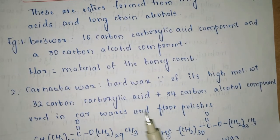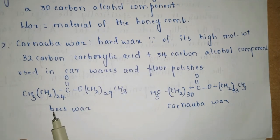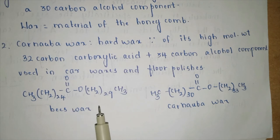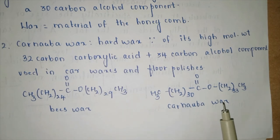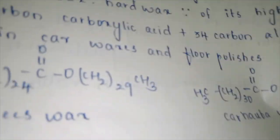Carnauba wax has a high molecular weight — a 32-carbon carboxylic acid plus a 34-carbon alcohol component — and is used in car waxes and floor polishes. The structure of beeswax is that of an ester with a 16-carbon acid and 30-carbon alcohol component. Carnauba wax (32-carbon acid + 34-carbon alcohol) is used in floor polishes and shoe polishes.